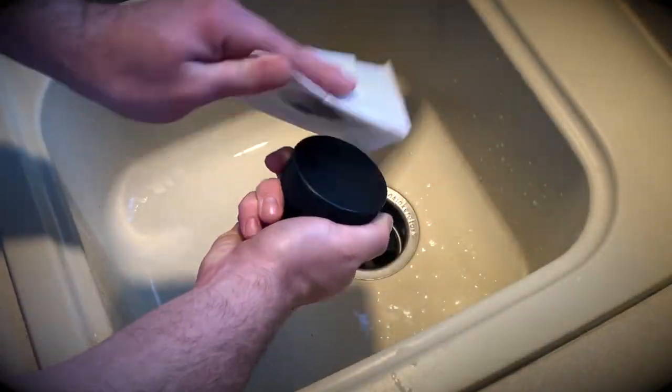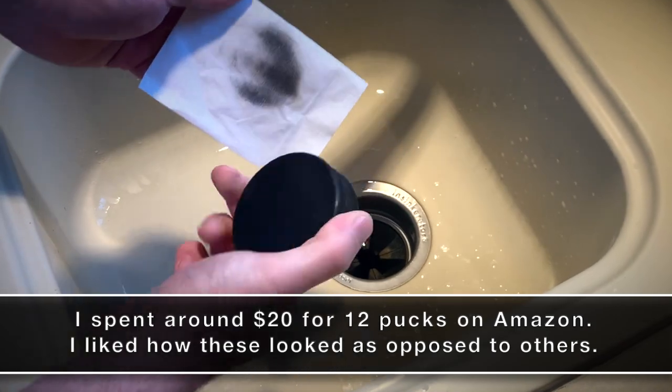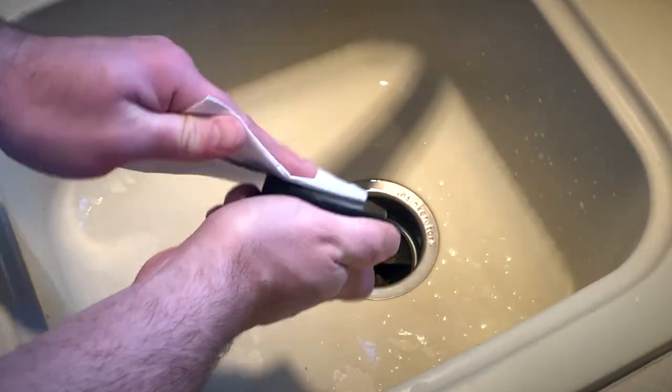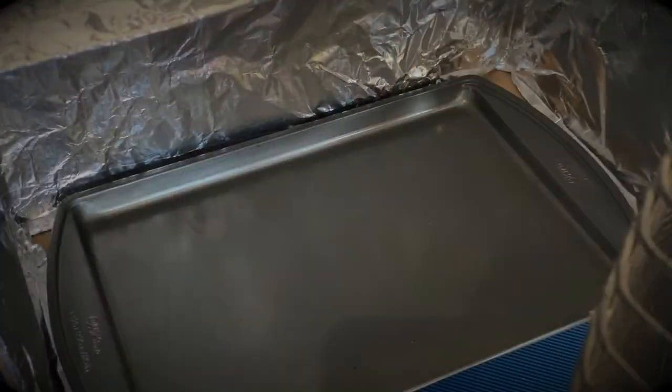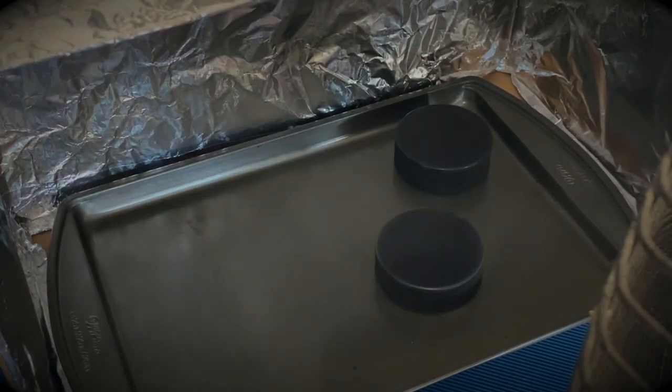I started by wiping off the tops and bottoms of each puck with a little acetone. I wanted to make sure I got any dirt or factory residue off of them, before placing them in my MacGyver inspired shop oven thing to warm up for a bit. And yes, I have a shop cookie sheet. Doesn't everyone?